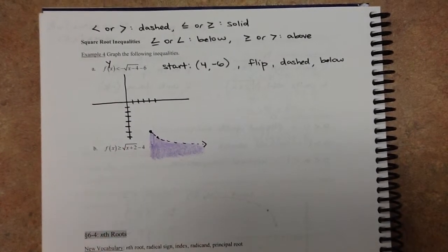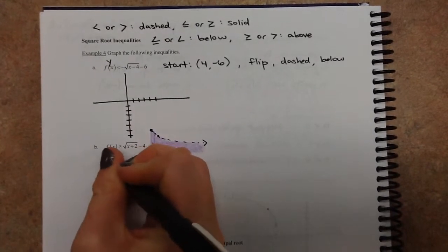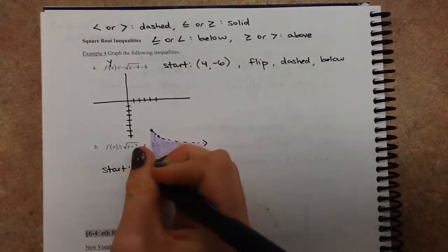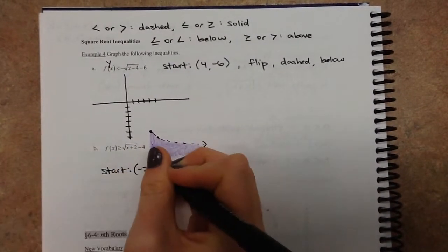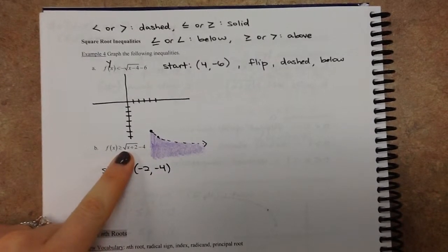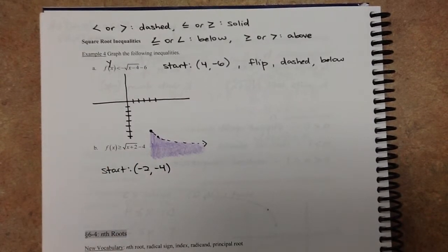Alright, let's get some info about this one. So our starting point for this next one is negative 2, because we go opposite, and then negative 4, y is always the same. There's nothing out front, so it's not flipped, it's not stretched. We're just going to go up one over one for our next point. The or equal to means we have a solid line, and the greater than means we shade above.